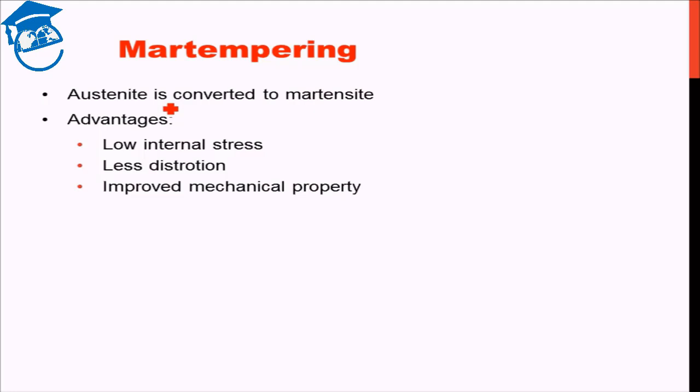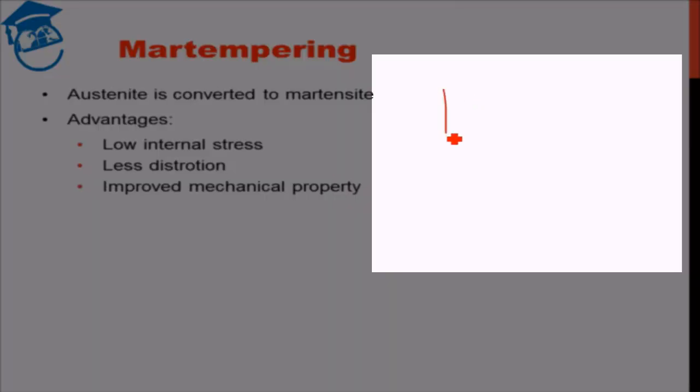What we do to obtain martensite, obviously either you can quench it as in the hardening process, cool it, take it to room temperature or to even lower temperature to get martensite. But as a result of that, what happens? A lot of stress is developed because of the thermal shock. But in martempering, we use a different approach.